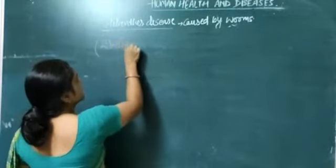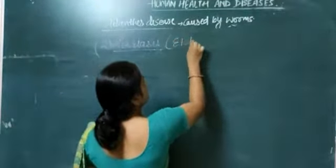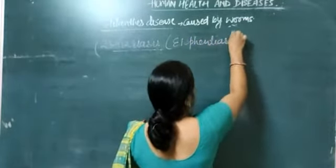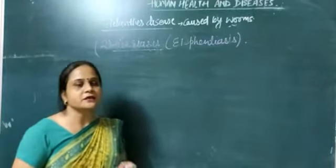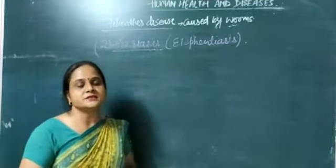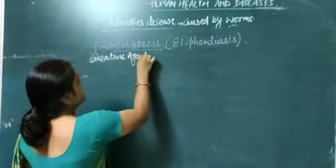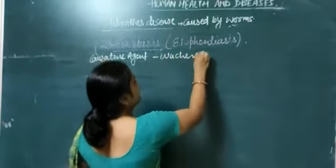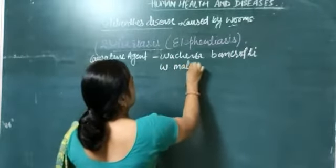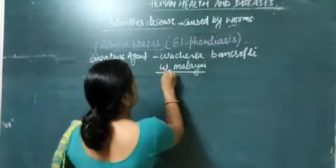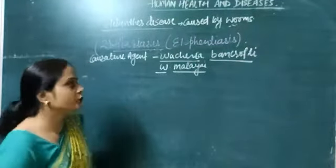The second disease in helminthic disorders is Filariasis. This Filariasis disease is also known as Elephantiasis. Generally, this disease is caused by different types of worms, but in India, only two different round worms have been noticed. The causative agents are Wuchereria bancrofti and Wuchereria malayi — these are two species of the filarial worm which cause Filariasis or Elephantiasis in humans.